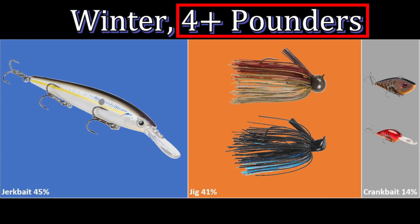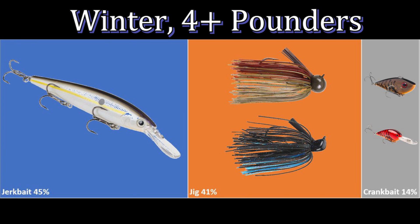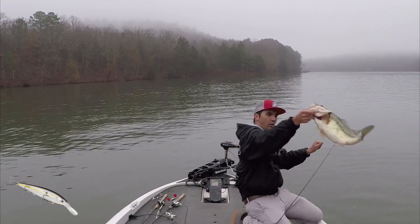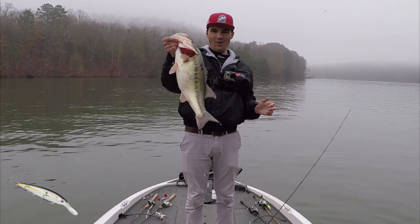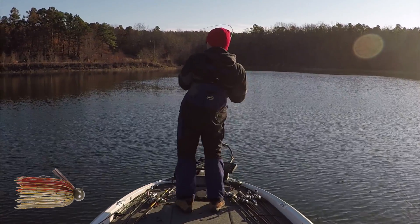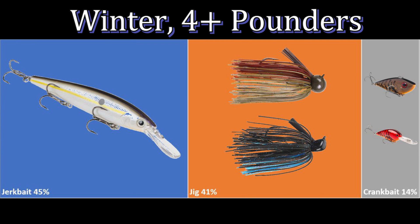Let's cut the winter data by fish size. For four-plus-pounders in the winter: 45% came on a jerkbait, 41% on the jig, and 14% on the crankbait. This is actually the first time the jig isn't the best bait in one of these graphs. A jerkbait is a great imitator of dying shad, and those big lazy bass like to come up and eat dying shad when water temperatures drop below 45 degrees.